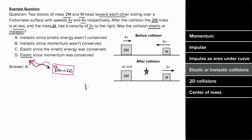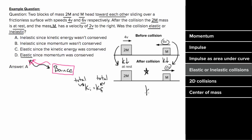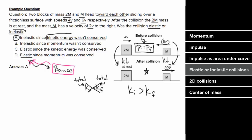To know whether a collision is elastic, you must determine whether total kinetic energy was conserved. Since the speed of the 2m mass decreased, its kinetic energy went down, and since the speed of mass m also decreased, its kinetic energy went down as well. So the final kinetic energy is less than the initial — kinetic energy was not conserved, making this collision inelastic. Note that momentum is conserved for both elastic and inelastic collisions; it's only kinetic energy that's not conserved in inelastic collisions.